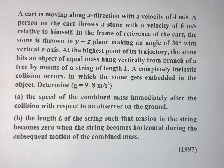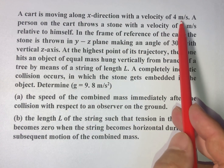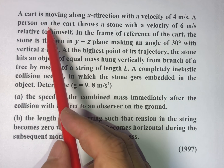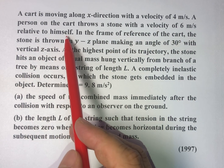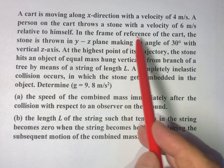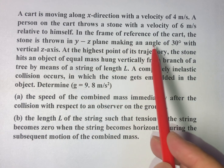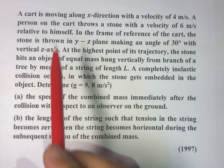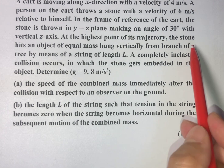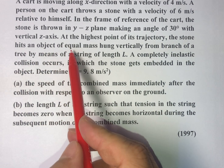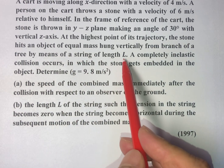Hello friends. In today's question, a cart is moving along the x-direction with a velocity of 4 meters per second. A person on the cart throws a stone with a velocity of 6 meters per second relative to himself. In the frame of reference of the cart, the stone is thrown in the yz-plane making an angle of 30 degrees with the vertical z-axis. At the highest point of its trajectory, the stone hits an object of equal mass hung vertically from a branch of a tree by means of a string of length L.